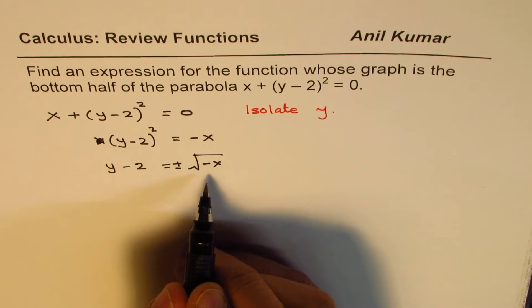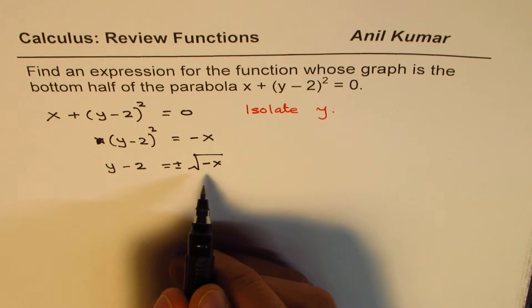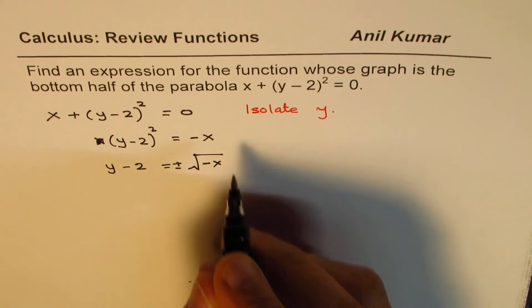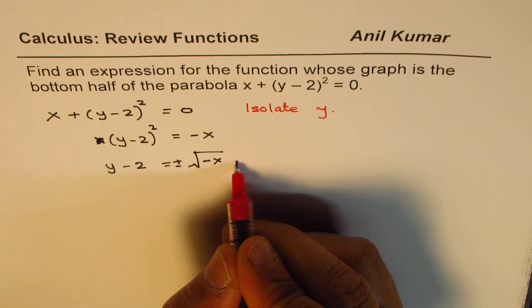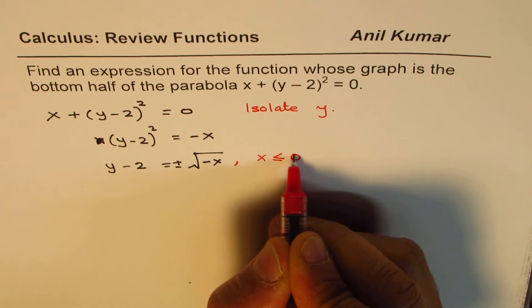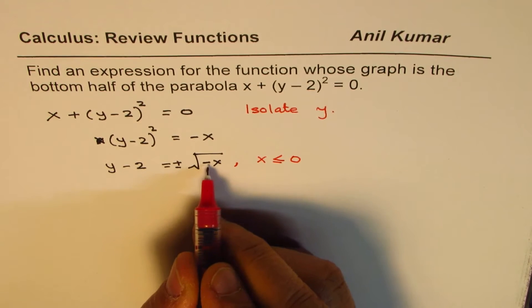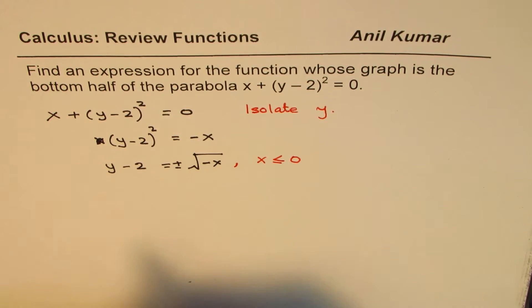At this stage, some students might think that is not possible, we cannot have square root of a negative number. Well, x is all numbers. At this stage, we're looking at the values of x which are less than or equal to 0. So if I write -1, it makes it 1, and square root of 1 is 1. So that is valid. The domain is getting restricted for x.